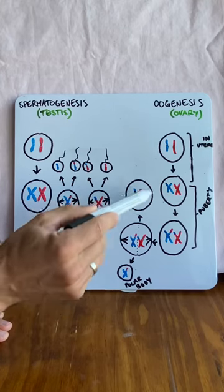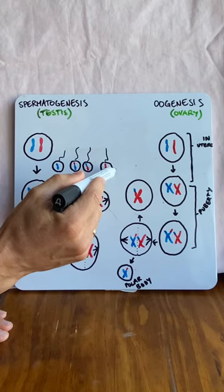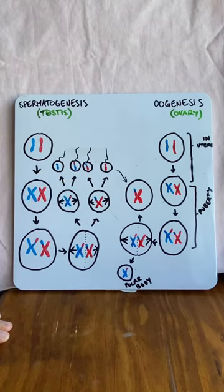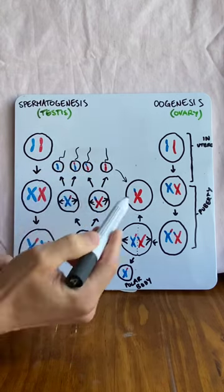This is actually what's ovulated. And then one of the sperm cells will come along and fertilize this egg. This is when it undergoes the next process of splitting apart.